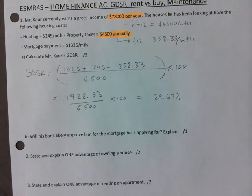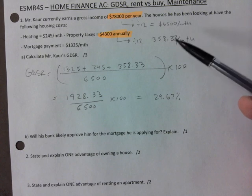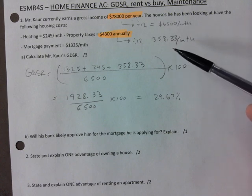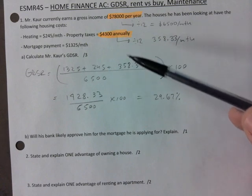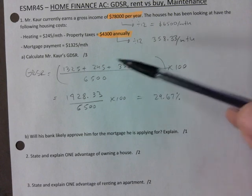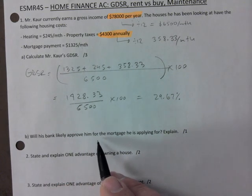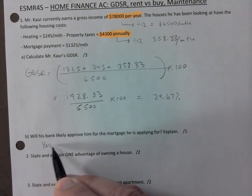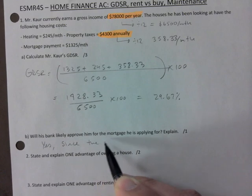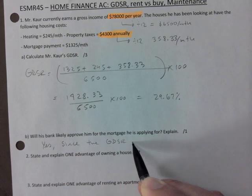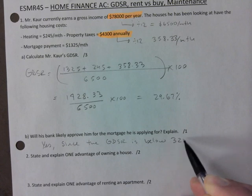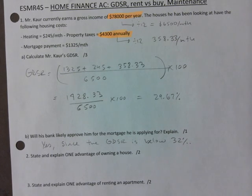That ends up giving you 29.67%. If you did it right, if you forgot to divide by 12, it's minus one right away, and then I would have to see if you did the rest right, if you did the arithmetic correctly. Will the bank approve for the mortgage he's applied for? And the answer is yes, since the GDSR is below 32%.